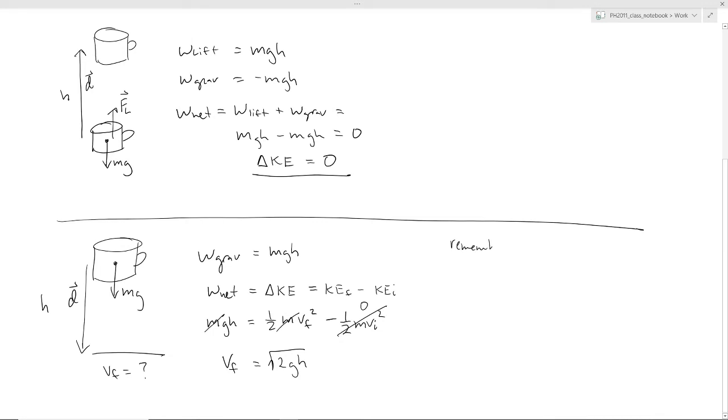Now notice, remember, back to 1D kinematics, we had this expression, v final squared equals v initial squared plus 2AD. In this case, we would have no v initial. You can see you can get the same result.